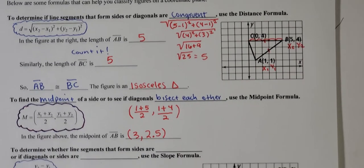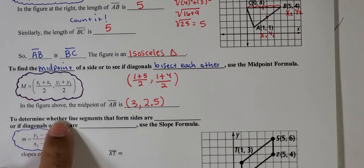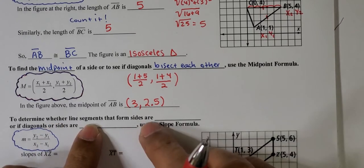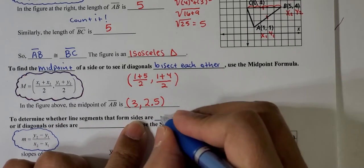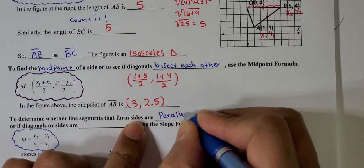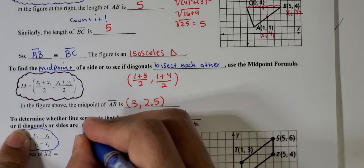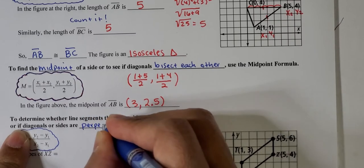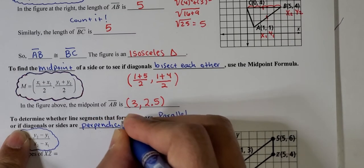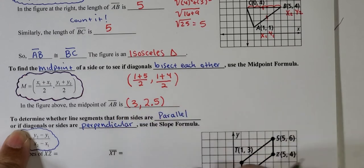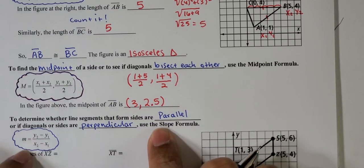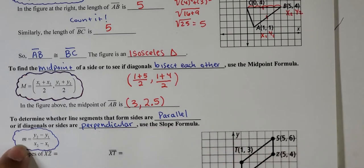To help us determine whether line segments that form sides are parallel or if diagonals or sides are perpendicular, we use the slope formula. That's this formula here, which you have seen in algebra 1 before.